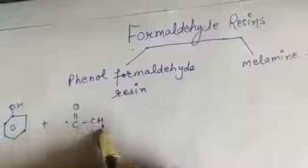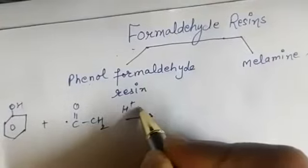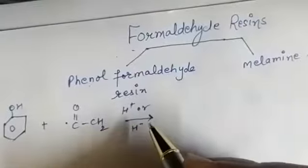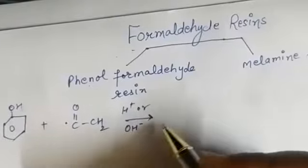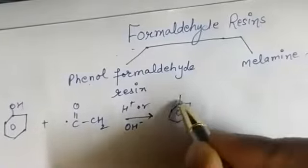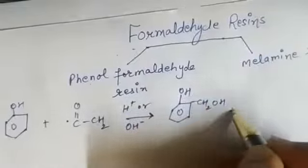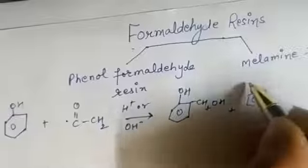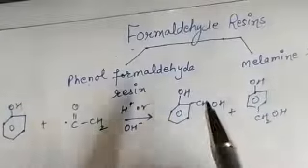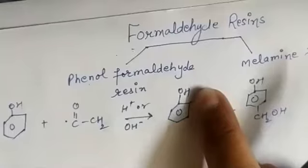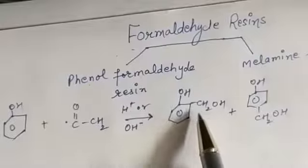The formaldehyde molecule (HCHO) condenses with phenol either in the presence of H⁺ ions or OH⁻ ions — that is, acid or base — to form two products: one is called orthohydroxymethyl phenol and another is called parahydroxymethyl phenol. The phenol molecule carries the hydroxymethyl group at the ortho or para position.